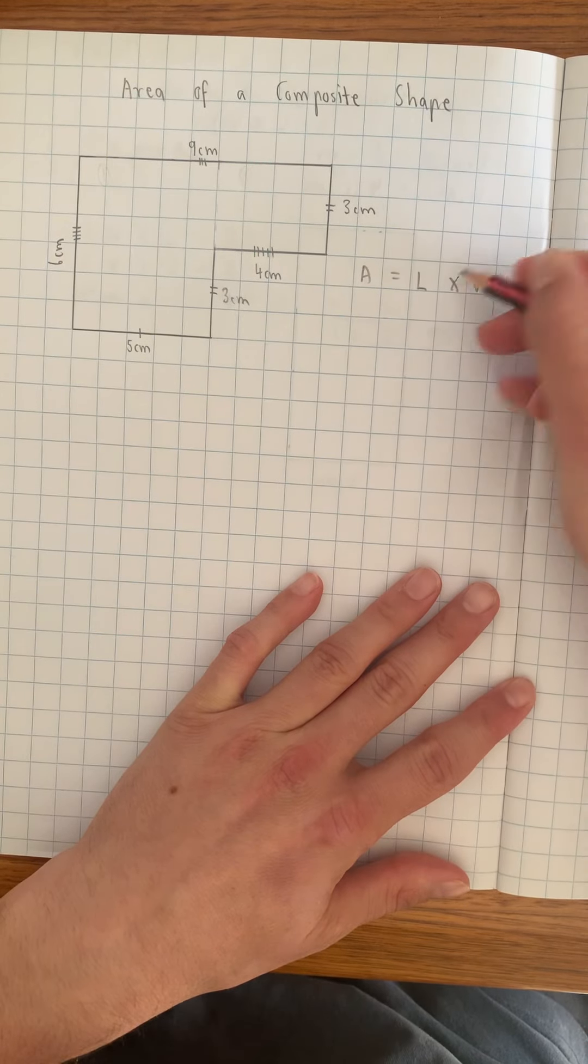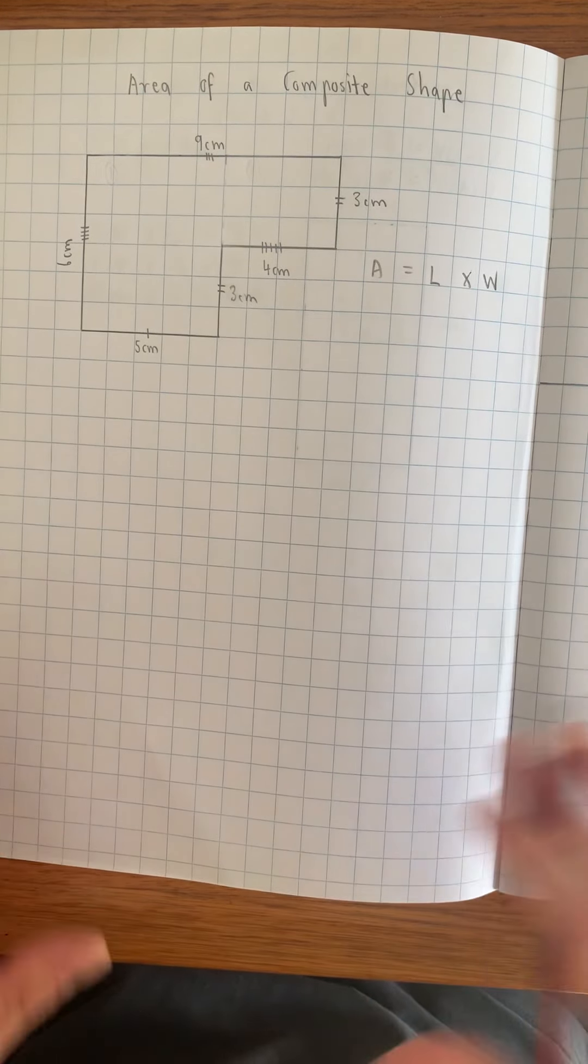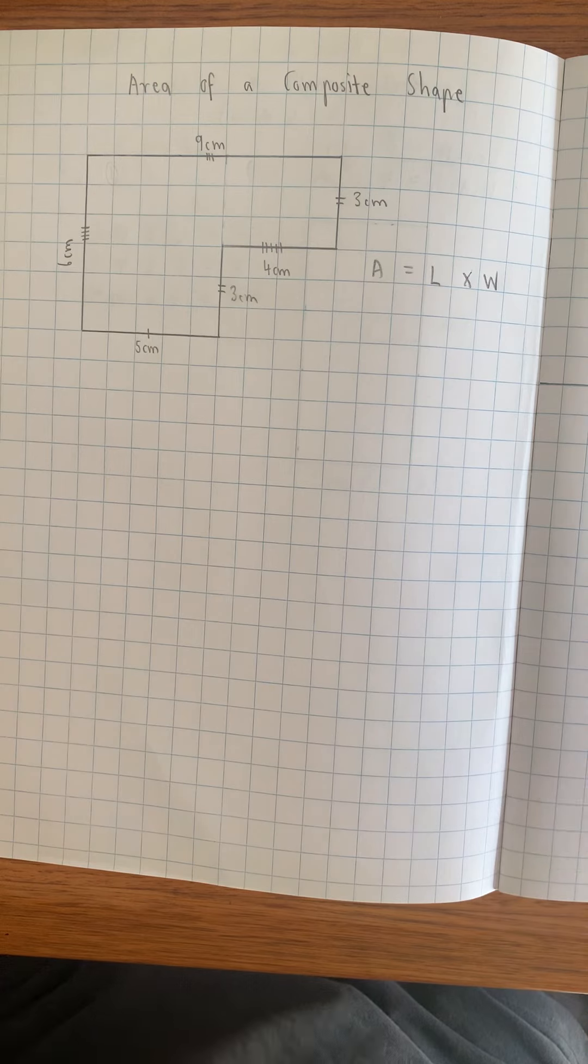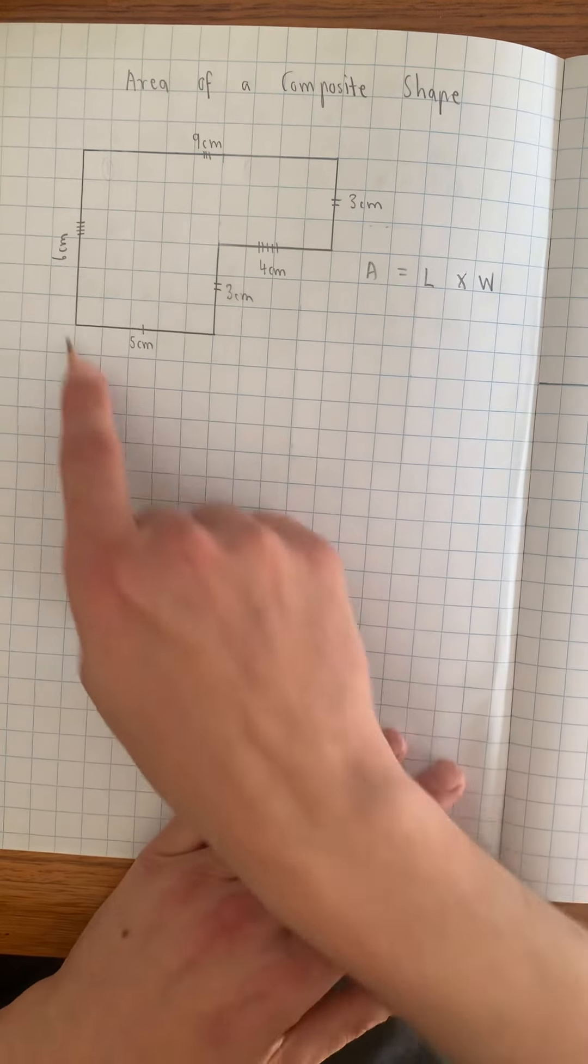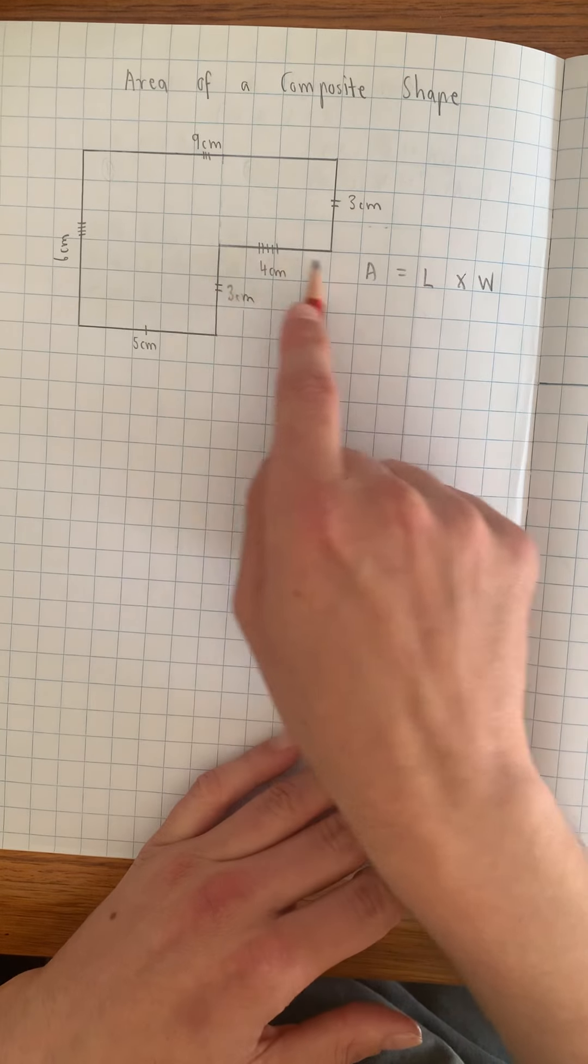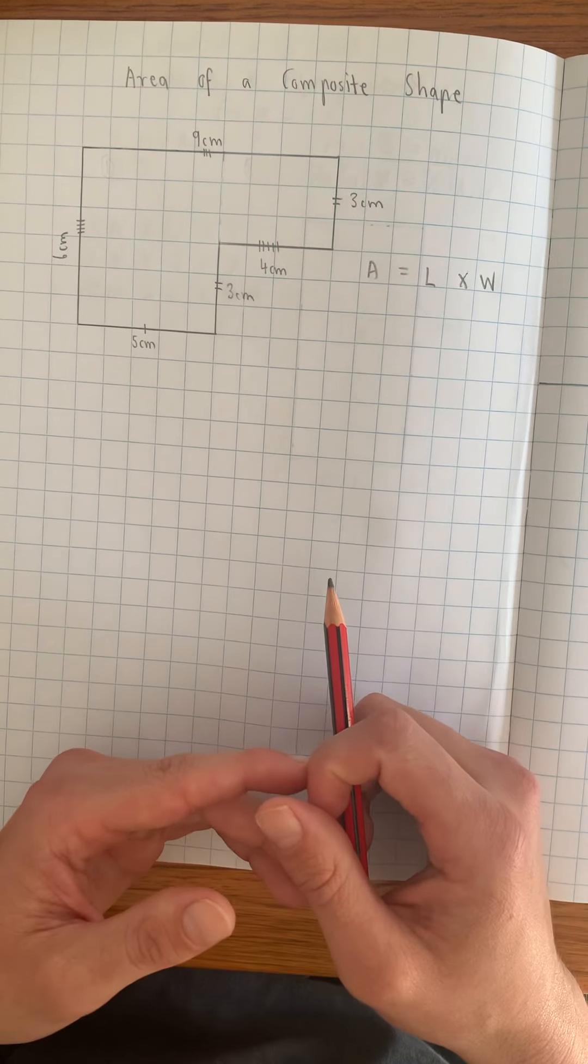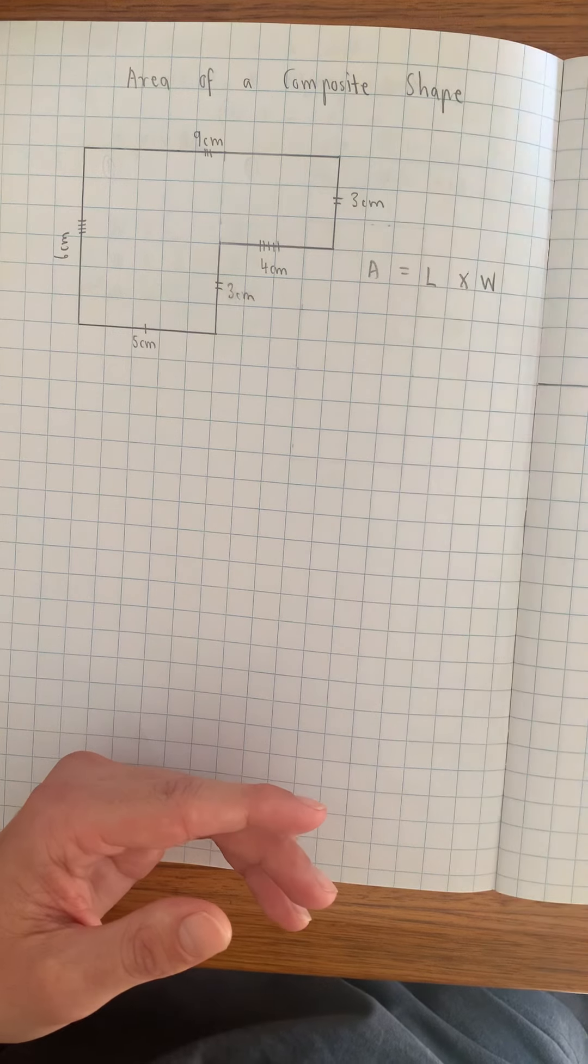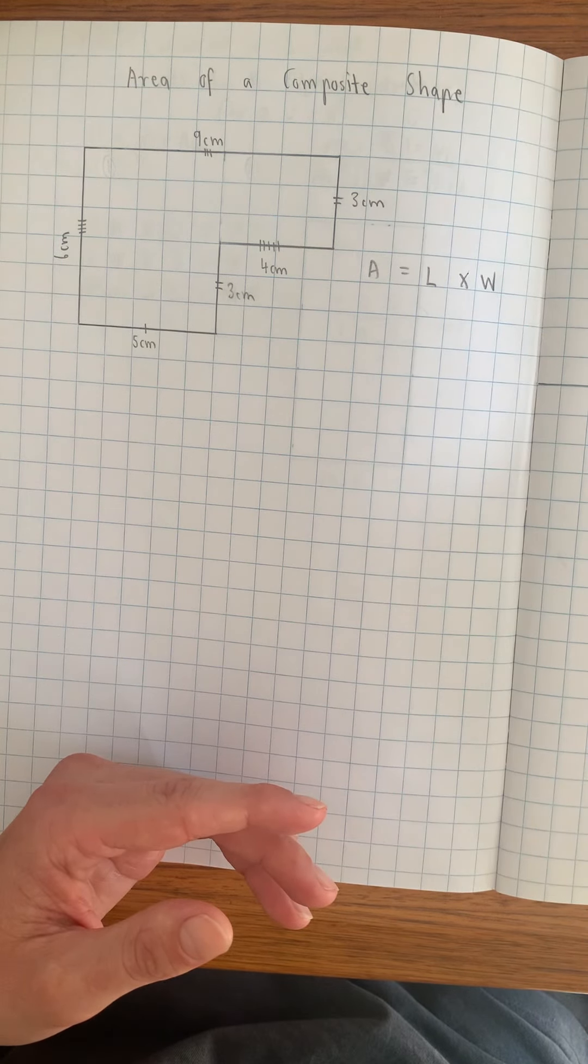So obviously before we section the shape up, as I'll show you in a minute, we can't really use area equals length times width because we don't have a regular and consistent length or width because it's a composite shape. So what we actually do is we look to split the shapes into different sections.